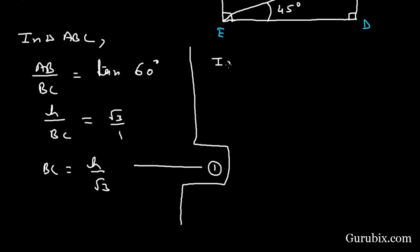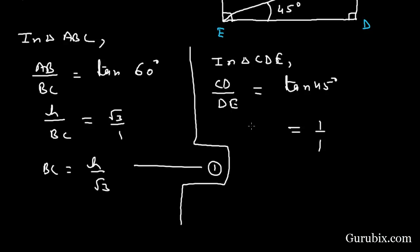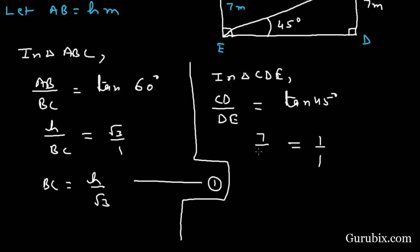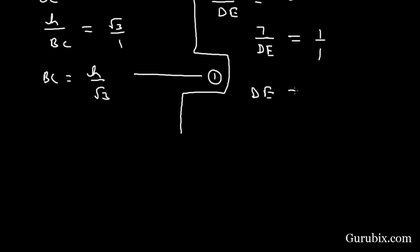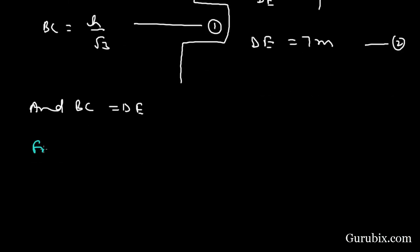Now we shall move to triangle CDE. We shall find the ratio of CD over DE. This equals tan 45 degrees, and tan 45 degrees is 1. CD is 7 and DE is not known, so DE equals 7 meters. This is our equation number two. Since BC and DE are equal, from equation one and equation two we can relate the two expressions.